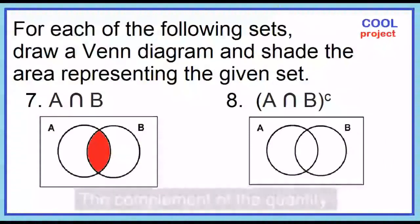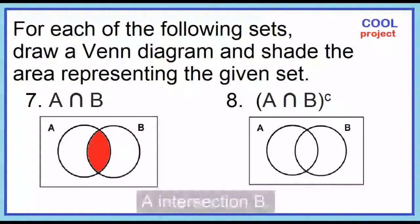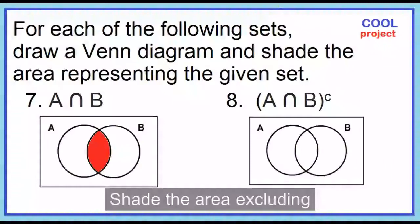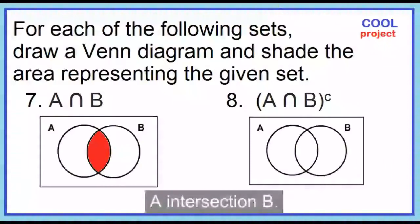Number 8. The complement of the quantity A intersection B. Shade the area excluding A intersection B.